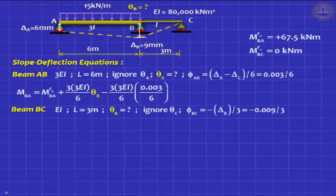Similarly, for beam BC, you should note that the EI is just EI. And the chord rotation now is negative. The left support goes down by 9 mm. So the chord rotation is 0.009 by 3, 3 meters is the span with a negative sign. If you do this correctly, you would not go wrong.